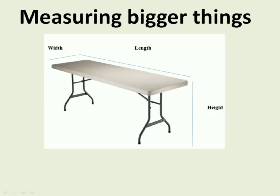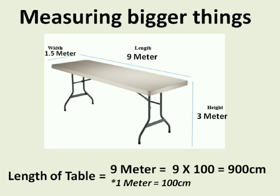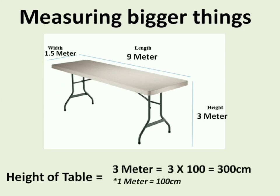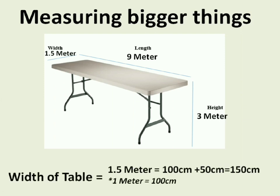Hence we use meter for bigger things. On screen you can see a table with 9 meter length, 3 meter height, and width 1.5 meter. So the length of the table is 900 centimeter or 9 meter. Similarly the height of the table is 3 meter or 300 centimeter. The width of the table is 1.5 meter, which is 100 centimeter plus 50 centimeter, that is 150 centimeter. Please note 1 meter is equal to 100 centimeter. You can do this small activity at your home, like measuring the door's height or length of your bed.